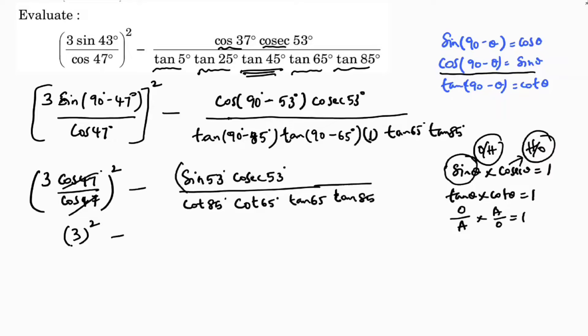Minus, this sin theta into cosec theta value is 1, by cot theta into tan theta: cot 85 into tan 85 is 1, cot 65 into tan 65 is 1. So 3 square is 9 minus 1, which is 8. So the answer is 8.